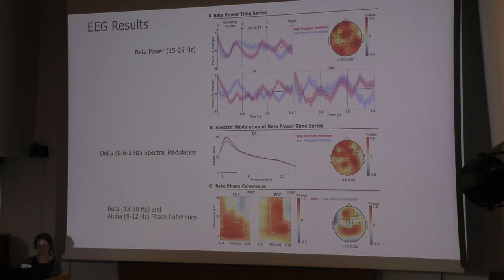We also were interested to see if there's a spectral modulation of this beta power time series. Interestingly, there's a peak in the data range between 0.6 and 3 hertz, which coincides with the entrainment rate, and it is significantly higher for the high precision prediction.